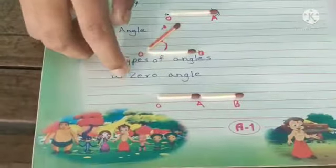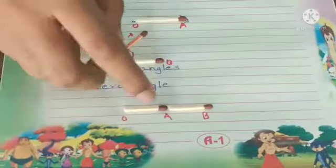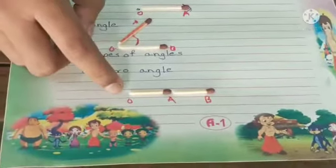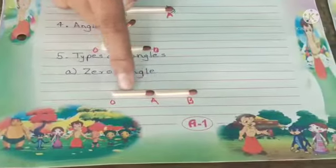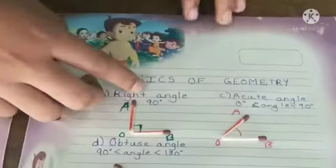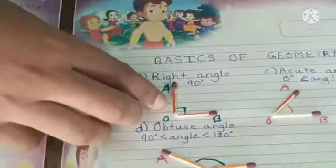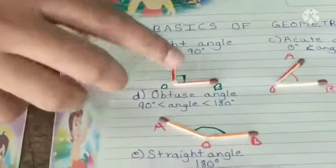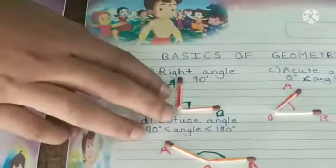The first angle is zero angle. The measure of this angle is 0 degrees, so we call this angle zero angle. After this, we have the right angle which has the measurement of 90 degrees, so we call this angle a right angle.